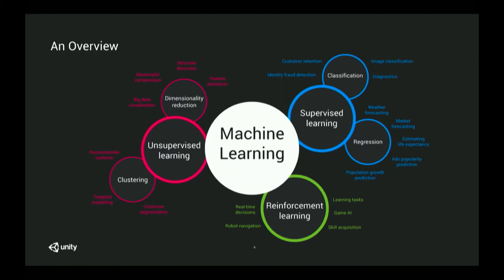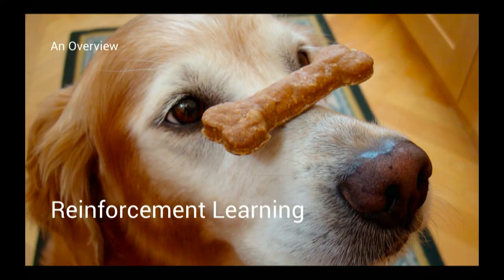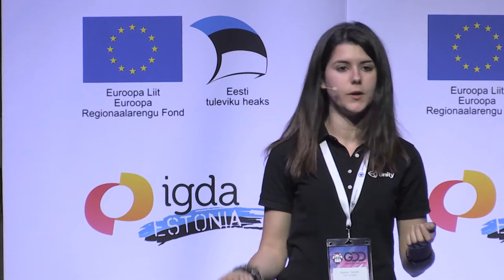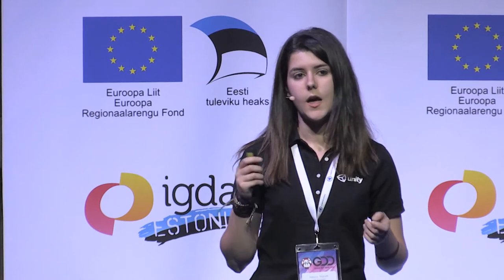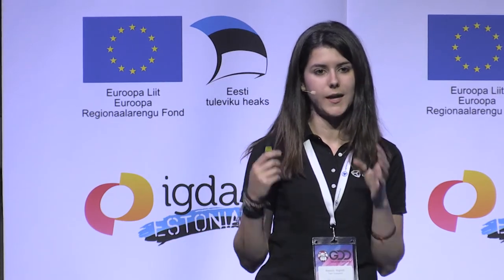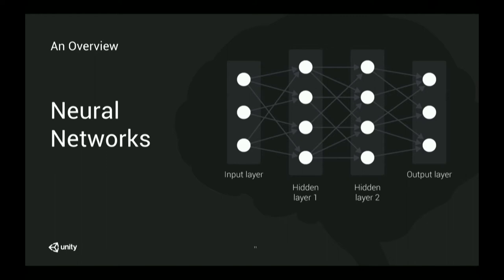The first two versions of machine learning agents — so far there are three — use reinforcement learning. To give a concrete example: say we have a dog and we want to teach it a trick. We give it a treat if it does the right thing. The same way, reinforcement learning algorithms are based on reward and punishment. The agent acts completely randomly, and if it does the right thing we provide a reward; if wrong, a punishment. This is made possible thanks to neural networks that work under the hood in Unity, so we don't need to worry about it.